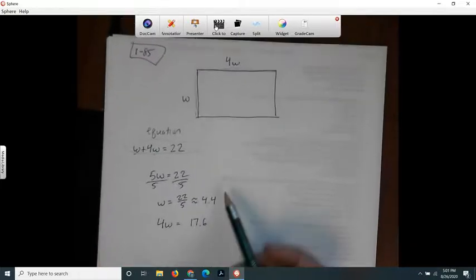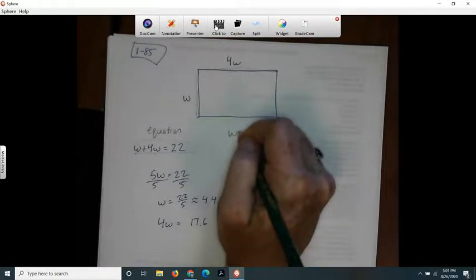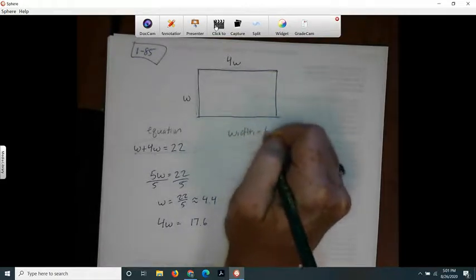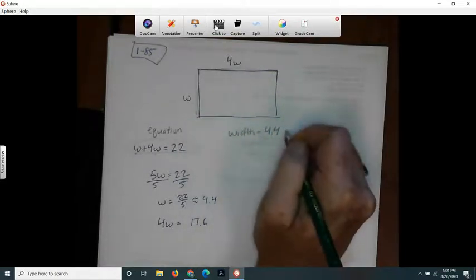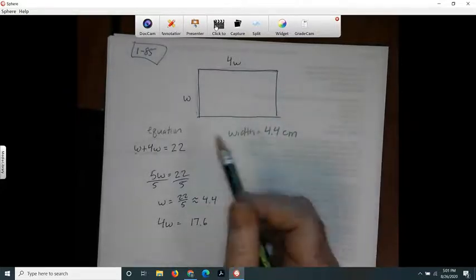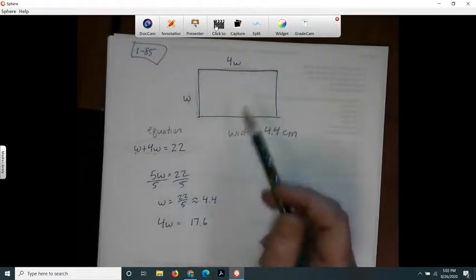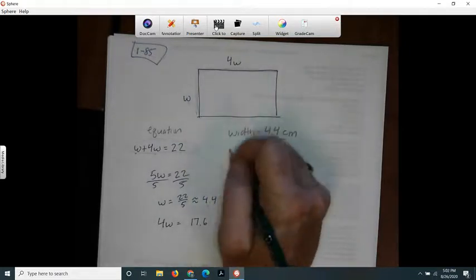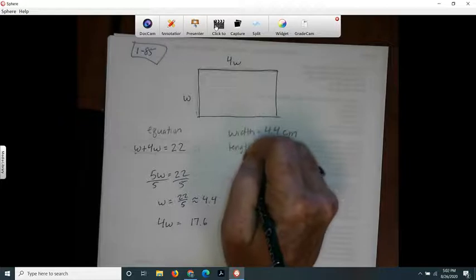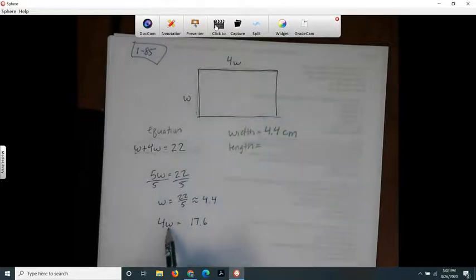And so now I know that the width is 4.4 centimeters. And so I can just get the length by multiplying that by 4. So the length is 4 times W. So I just said I got 4.4 times 4 and I got 17.6.